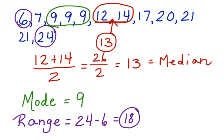So now you have seen the measures of central tendency in action. The mean, the median, the mode, and the range.